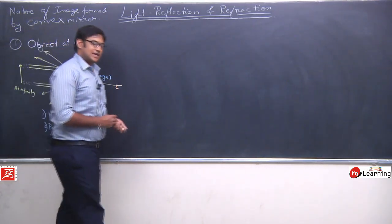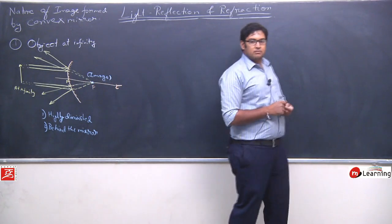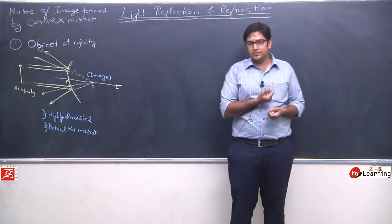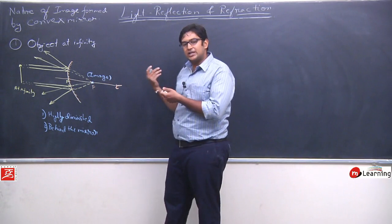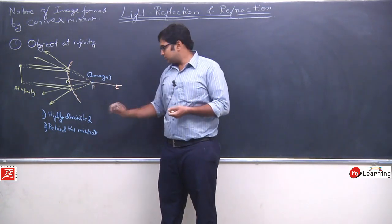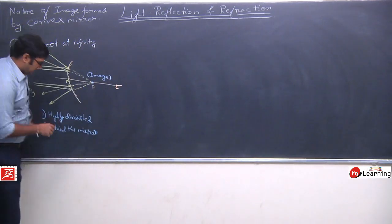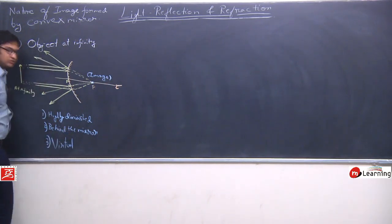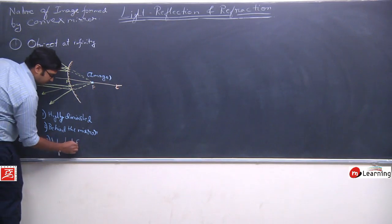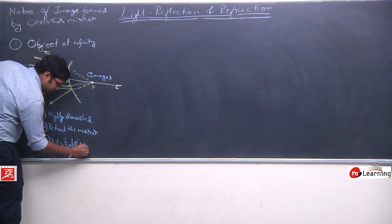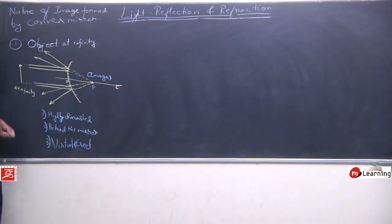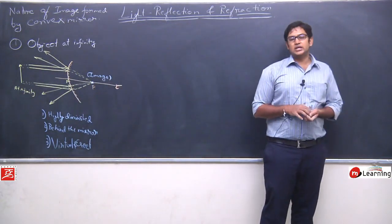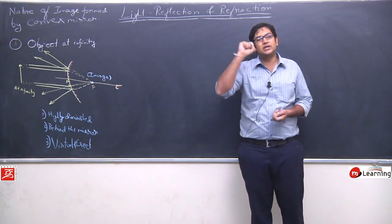Now, we cannot say that image is formed at focus, because the image is not actually forming at focus. It only appears as if the image is forming at focus. But if you look behind at the focus, you will see no image there. So we will say: image is virtual and erect. If the object is at infinity, the image in a convex mirror will always be virtual, erect, and highly diminished.